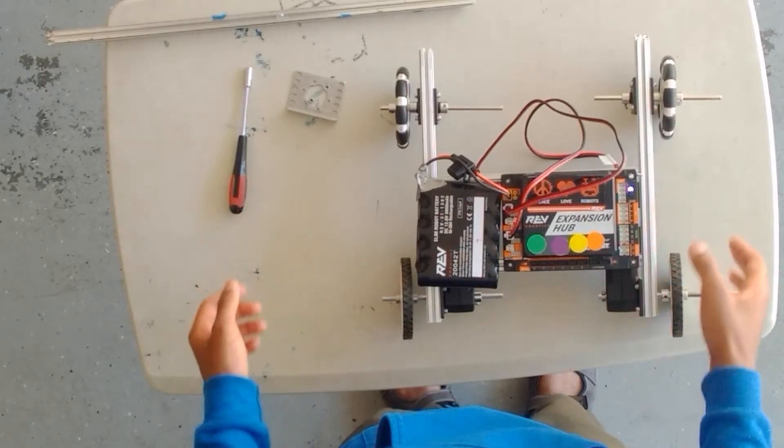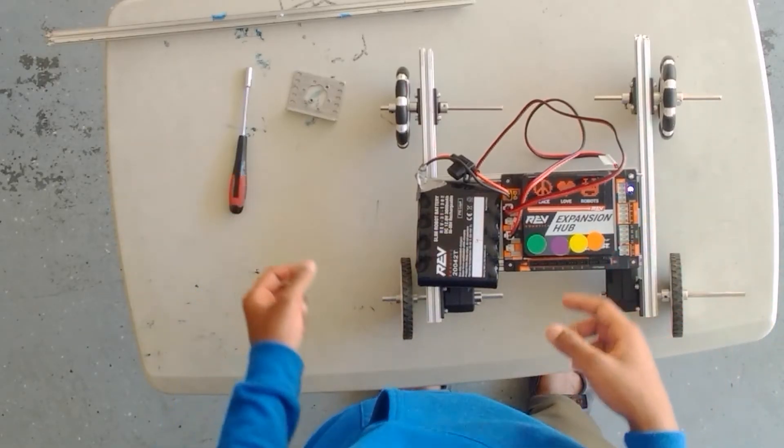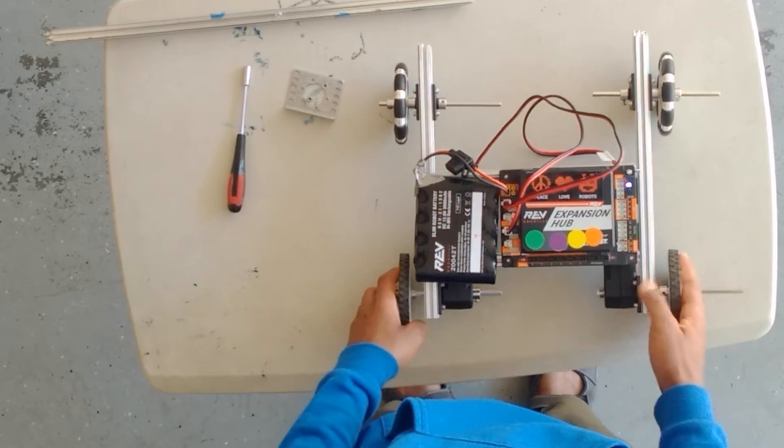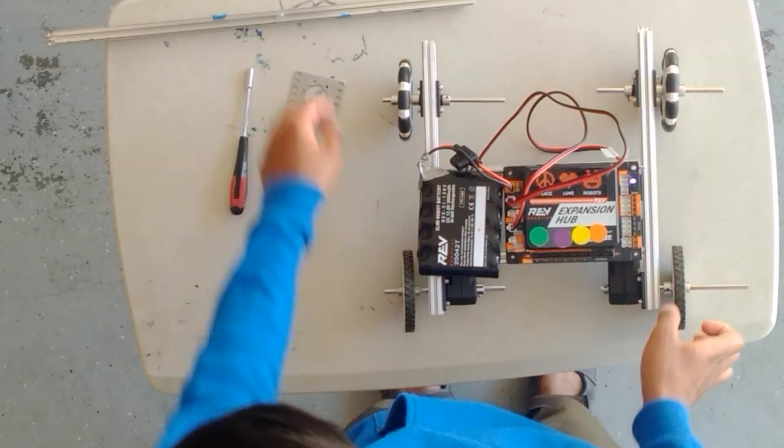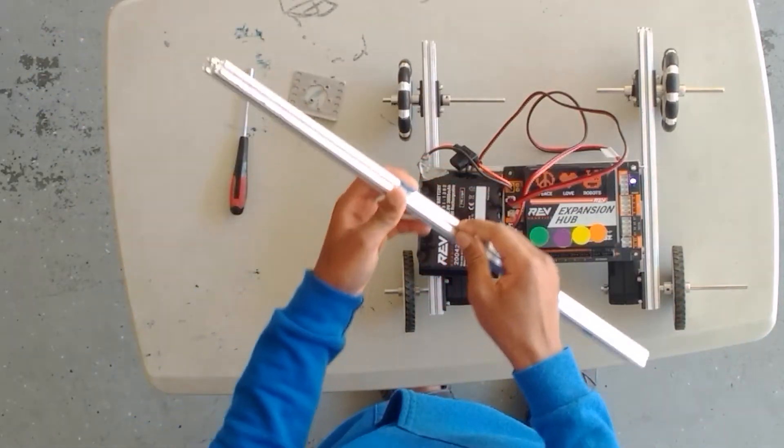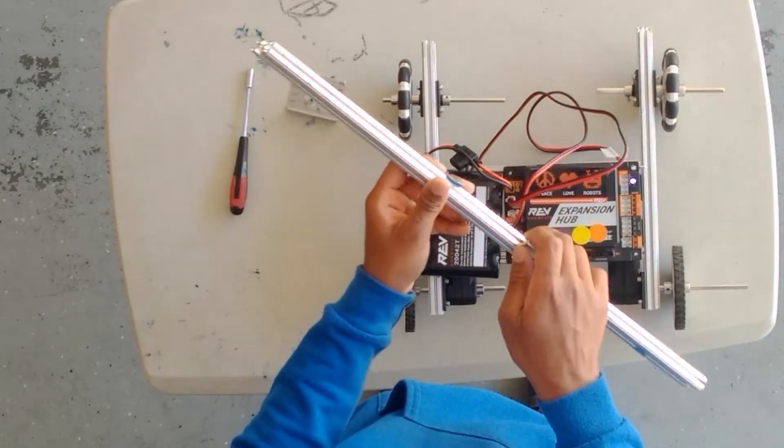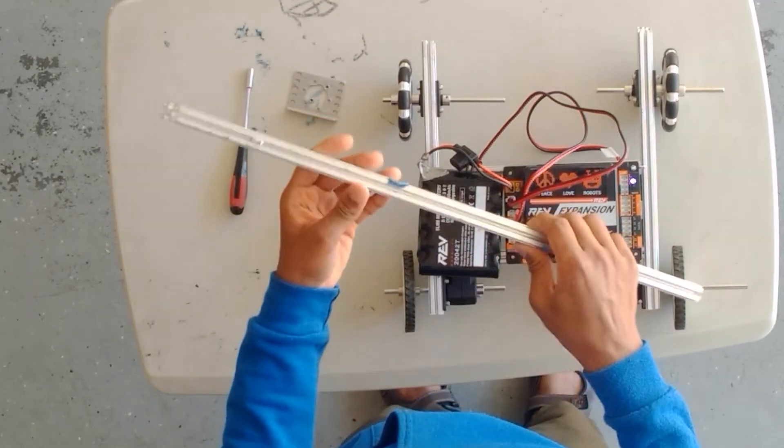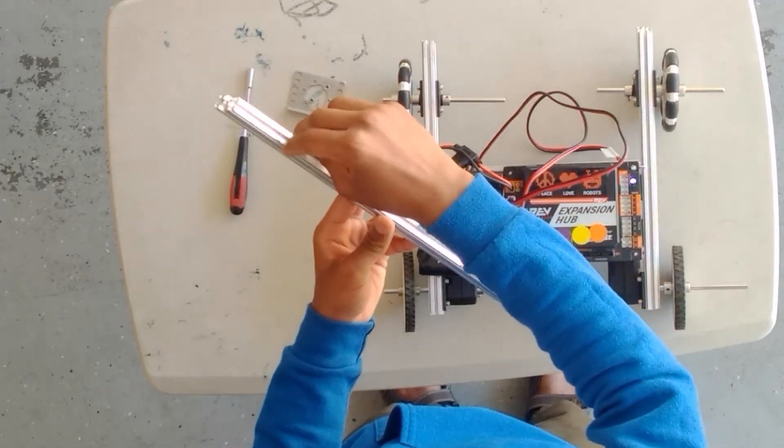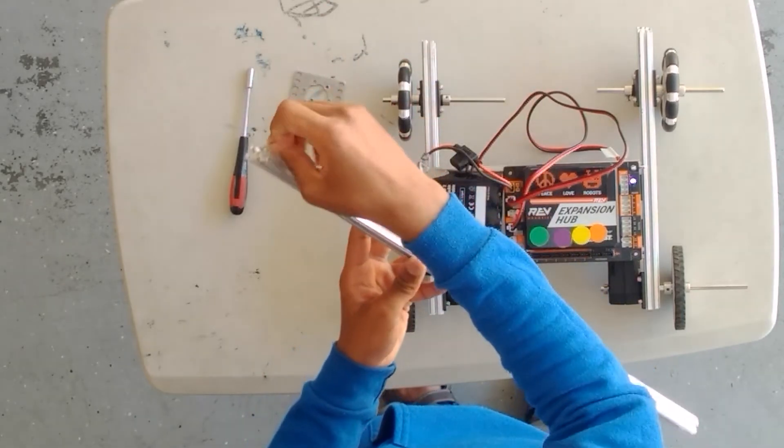Now I'm going to be talking about the different build systems that you can use for FTC. Here we have one of the build systems that sell primarily to FTC teams. This is called REV and it's mainly based off of these extrusions. These extrusions are 15mm in width and length and they allow these hex screws to slide through.